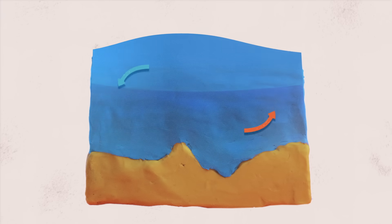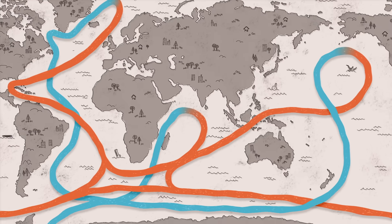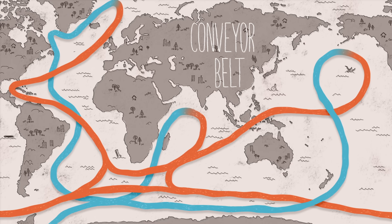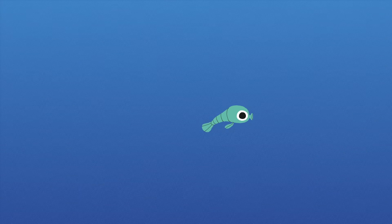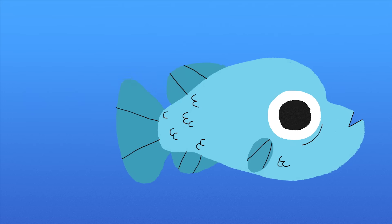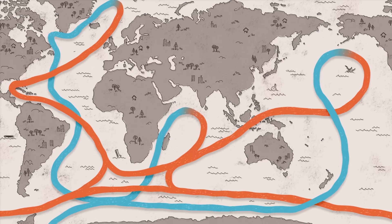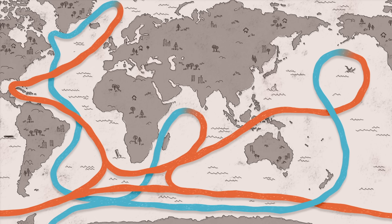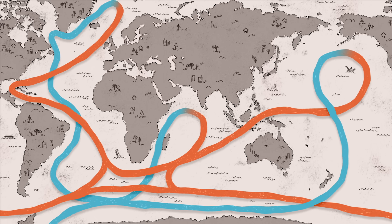Thermohaline circulation of deep water and wind-driven surface currents combine to form a winding loop called the global conveyor belt. As water moves from the depths of the ocean to the surface, it carries nutrients that nourish the microorganisms which form the base of many ocean food chains. The global conveyor belt is the longest current in the world, snaking all around the globe.